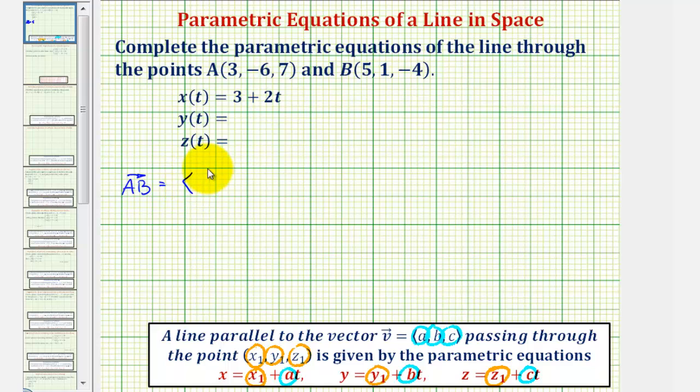To write vector AB in component form, we take the coordinates of the terminal point and subtract the corresponding coordinates of the initial point.